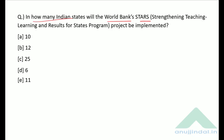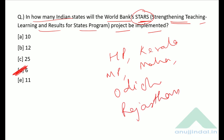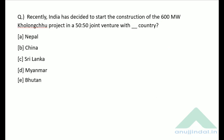In how many Indian states will the World Bank's STARS — Strengthening Teaching-Learning and Results for States — program be implemented? The program has been launched in six states: Himachal Pradesh, Kerala, Madhya Pradesh, Maharashtra, Odisha, and Rajasthan.